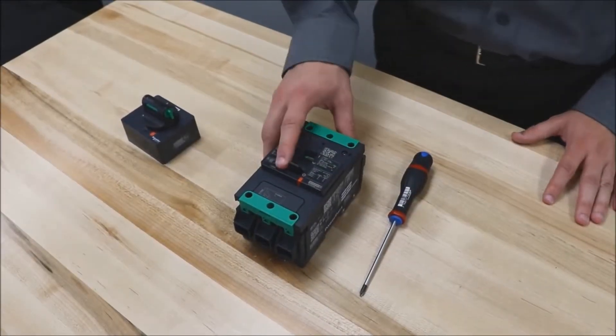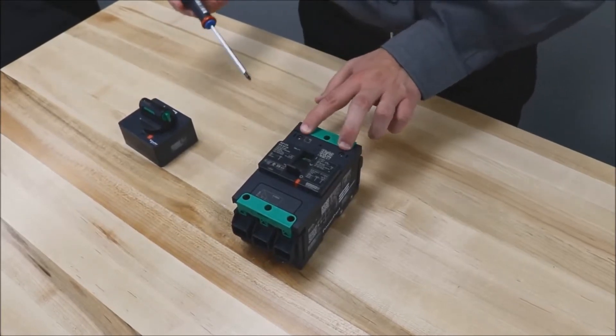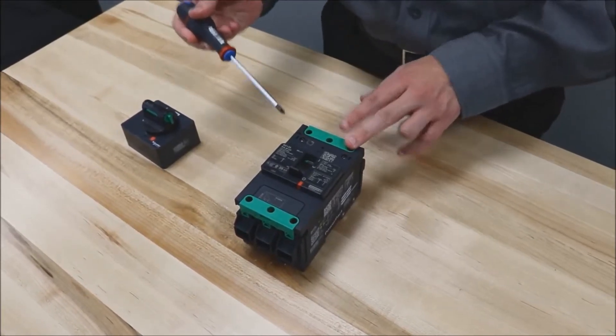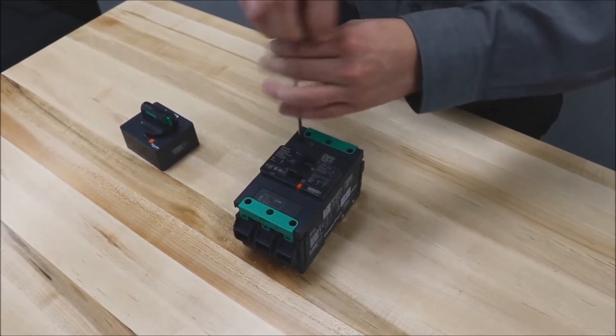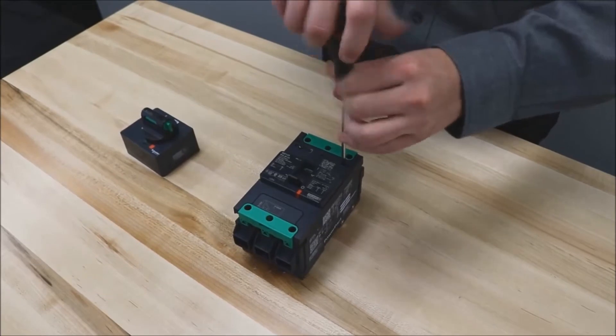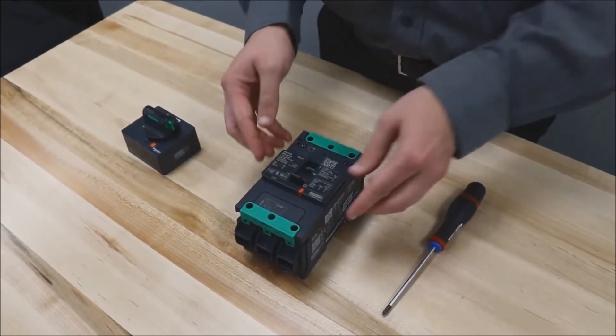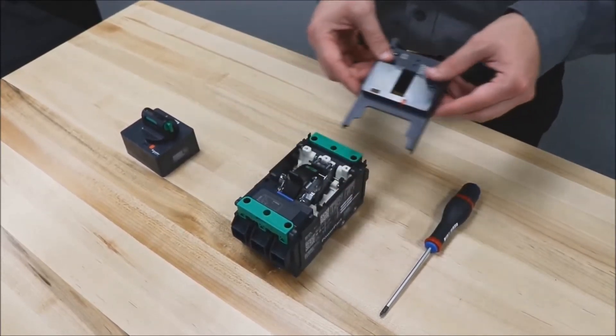First with the breaker in the off position remove the cover by loosening these two screws with a PosiDrive 1 screwdriver and then lift the cover and slide it out from the bottom.